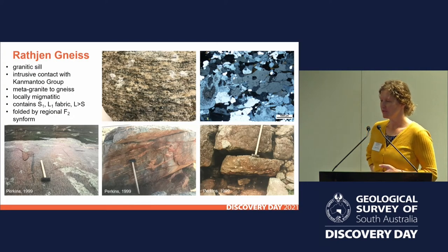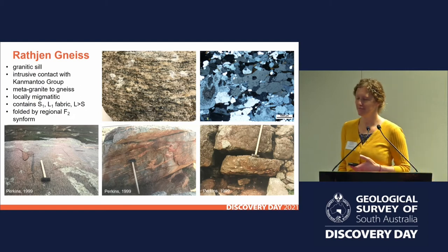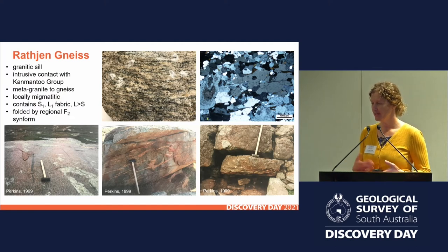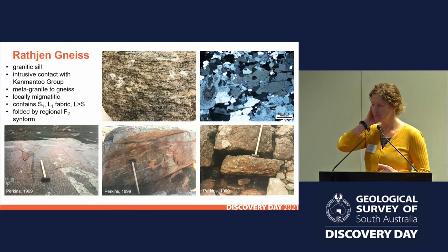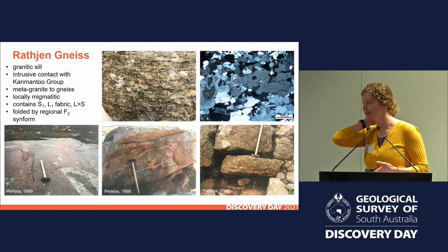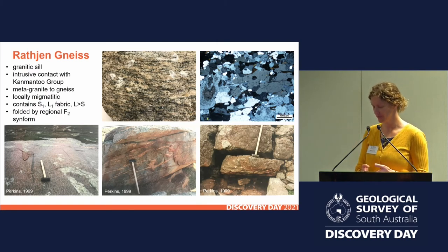Let's take a quick look at the rocks for which I'll show age dates. The Rathgen Gneiss is traditionally the most deformed granite, so it's traditionally thought of as the oldest. It's a sill that intrudes the Camantoo Group. Its strain fabrics are quite variable — mostly gneissic locally. It's migmatitic and contains leucosomes. The striking thing about it is its very strong lineation; in the bottom right you can see leucosomes strung out, looking down the plane of the lineation.